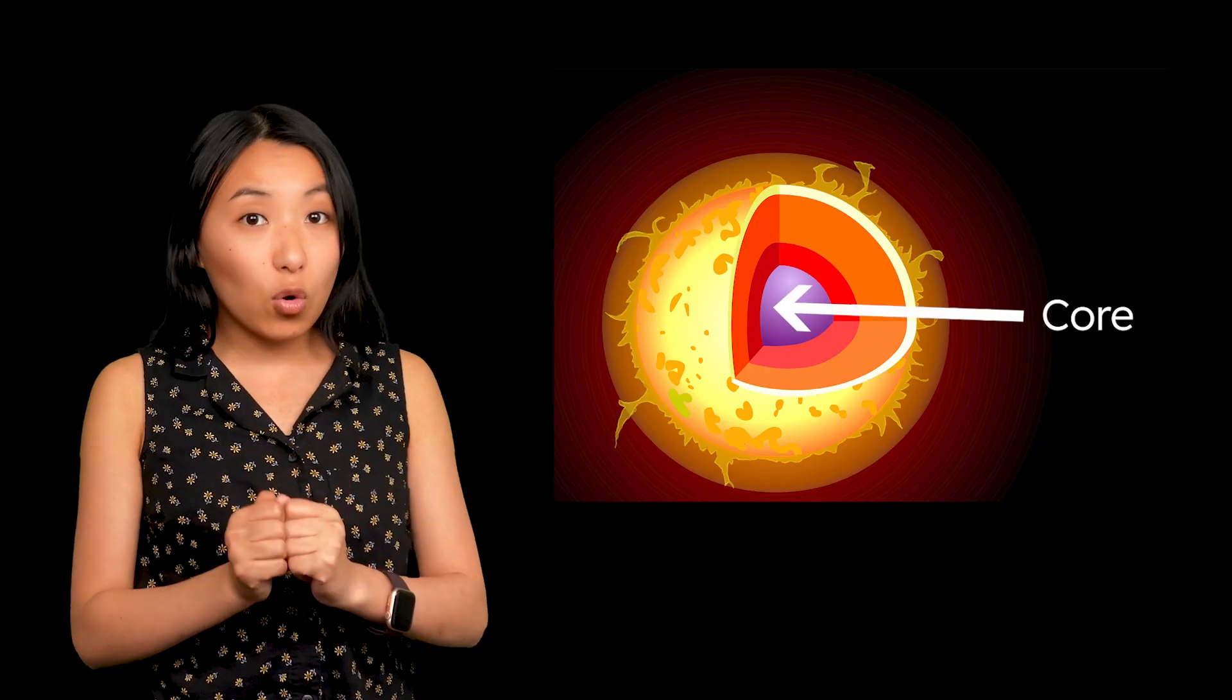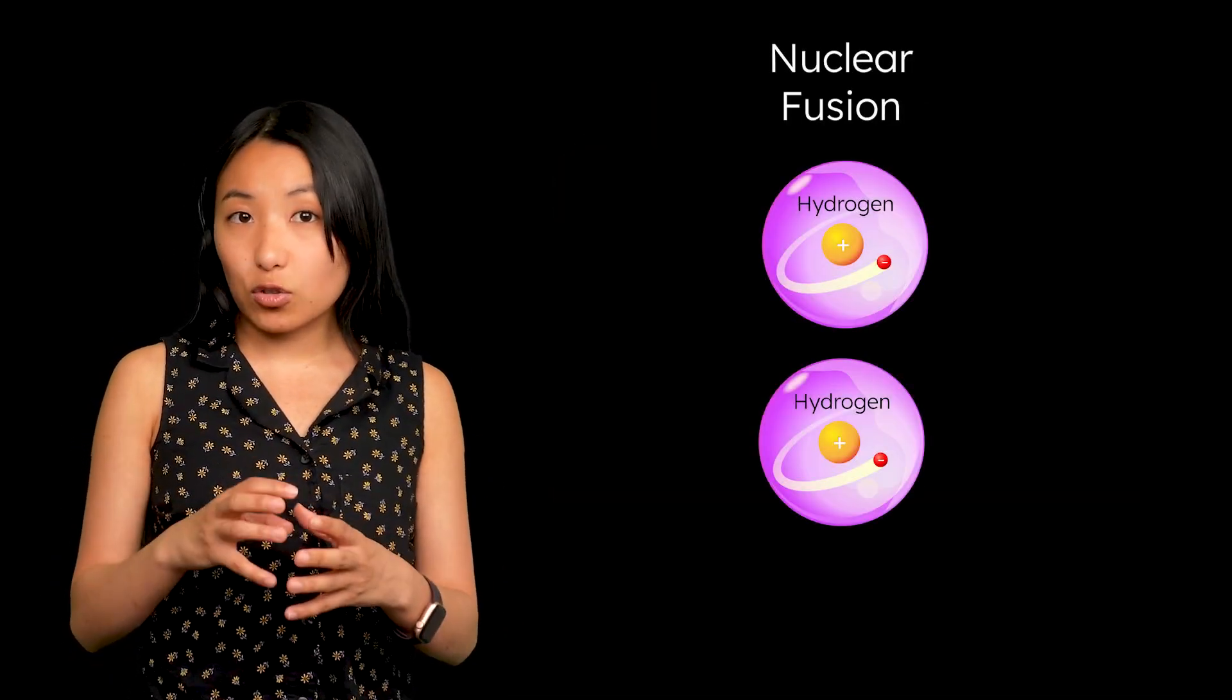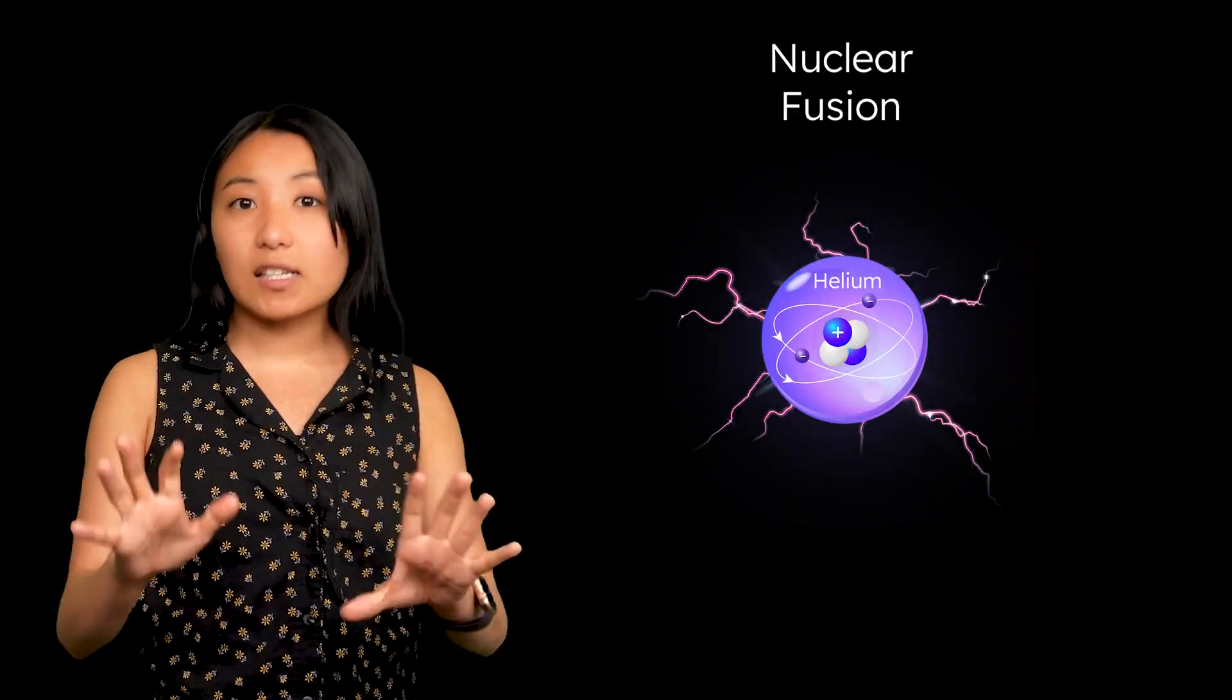We've spent time exploring the sun's layers, from the super hot core to the outer corona, and we've seen how nuclear fusion at its center turns hydrogen into helium, releasing a massive amount of energy. That fusion is what makes the sun shine. And that's not just a solar thing, it's a stellar thing. Every star in the universe produces energy the same way.